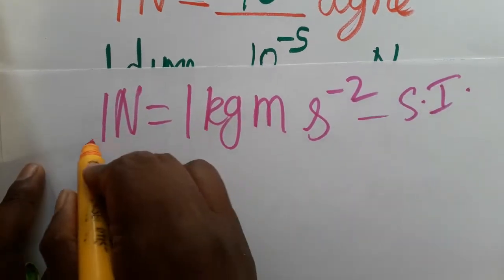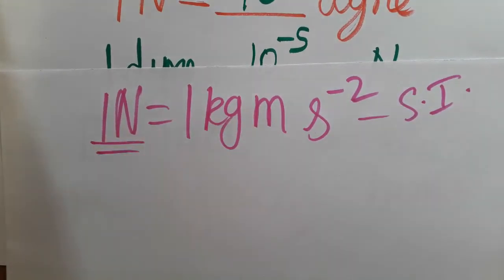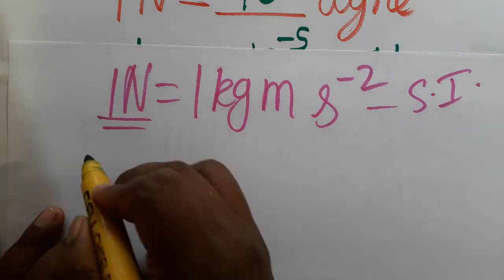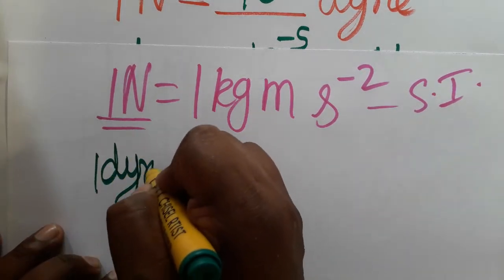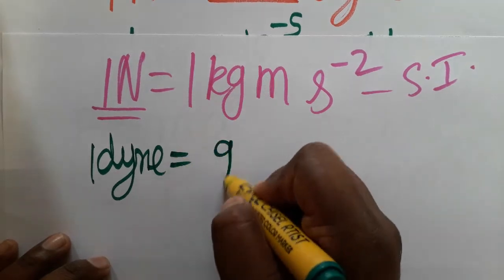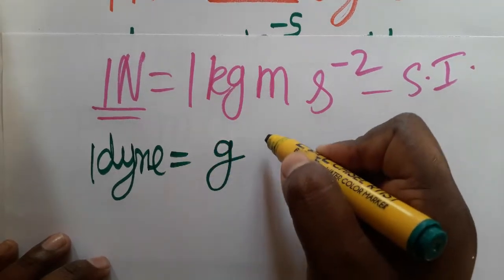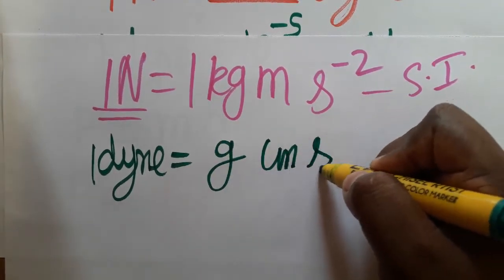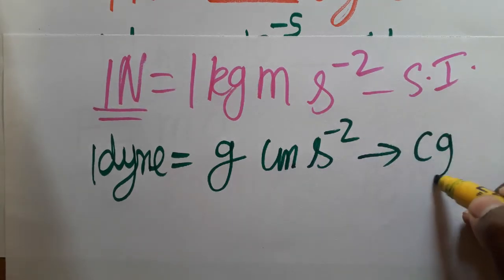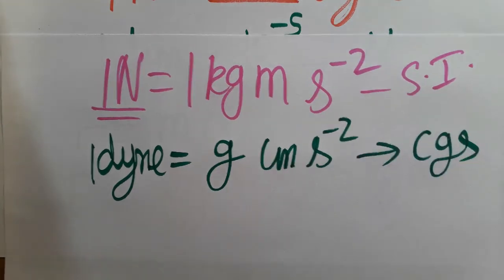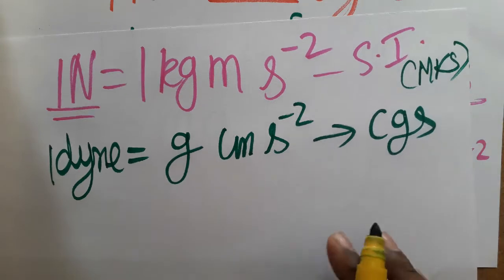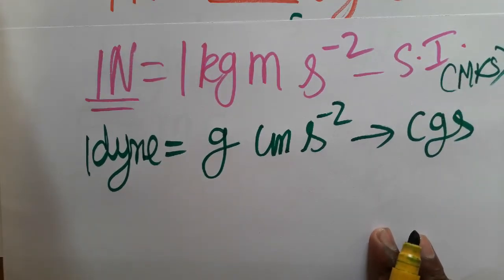On the other hand, we have dyne. Dyne is in the CGS system — centimeter, gram, second. In CGS, kilogram becomes gram, meter becomes centimeter, and second remains second. So newton follows the MKS system (meter, kilogram, second), while dyne follows the CGS system (centimeter, gram, second).